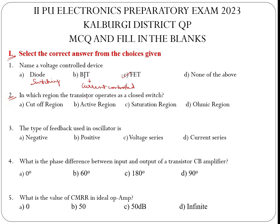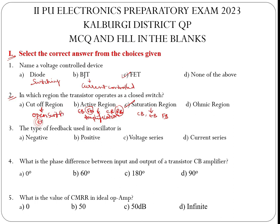Second question: In which region does the transistor operate as a closed switch? The transistor operates as a closed switch in the saturation region, because in this region both the collector-base and emitter-base junctions are forward biased. In the cutoff region, the collector-base is reverse biased and it is used as an open switch, with both emitter-base and collector-base junctions reverse biased.